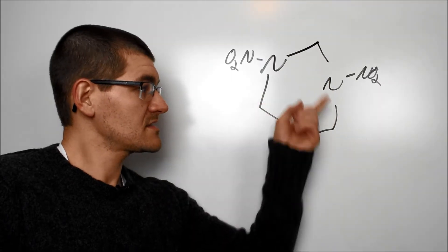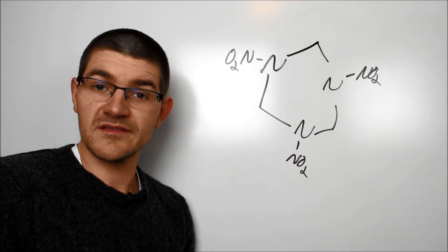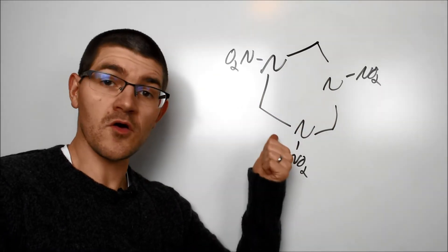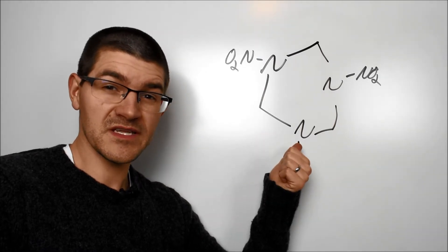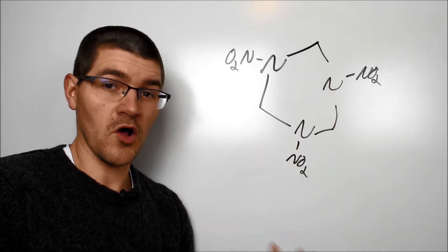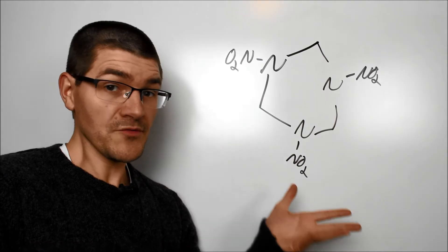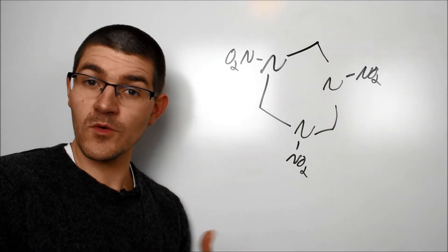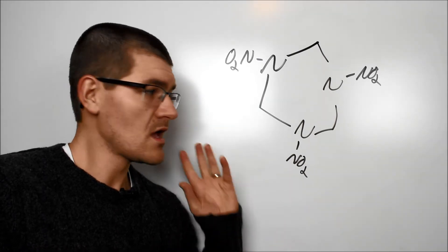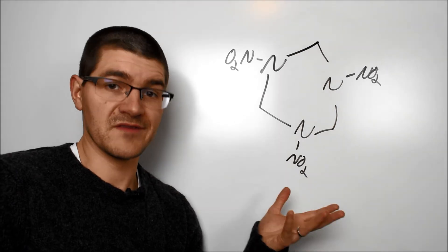You can see RDX is a six-membered heterocycle with three nitrogens and three carbons, and the NO2 groups are on the nitrogens. This is different from TNT, where the NO2s were on the carbons of that benzene ring. Both of those are different from NG and NC, where those NO2s were on oxygens, all leading to three different classes of nitro structures.